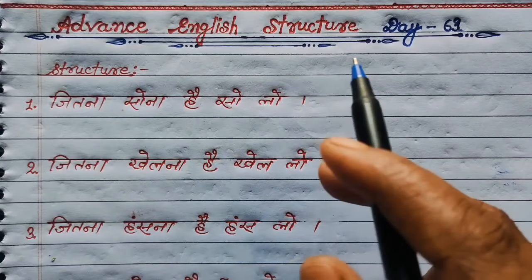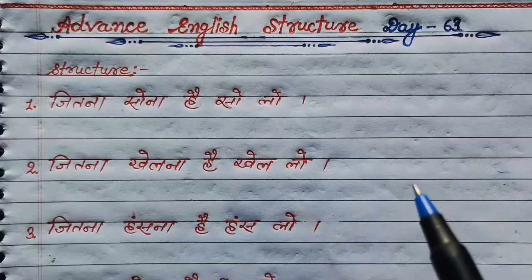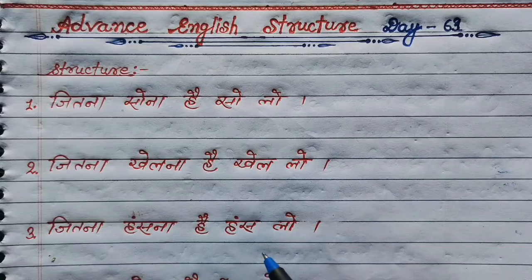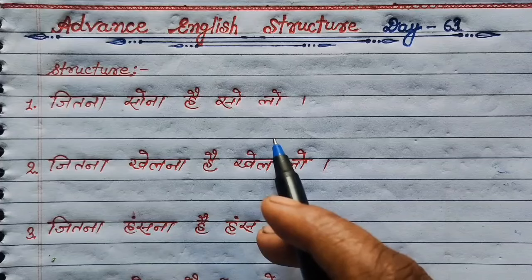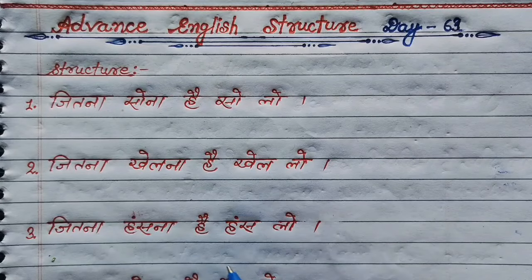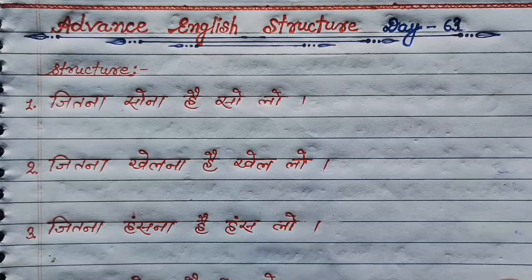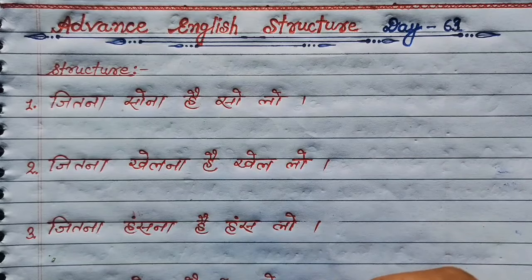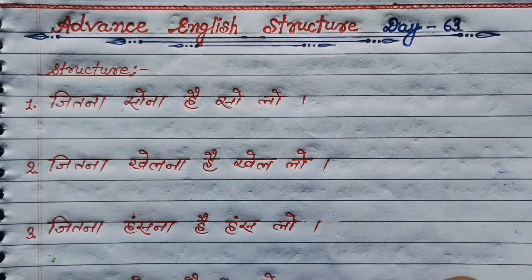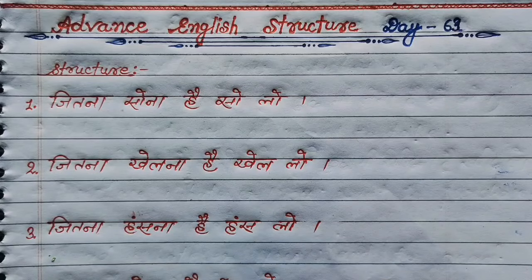Today is Advanced English Structure Day 63. Guys, हम काफी बार अपने day-to-day life में कुछ इस तरह के sentences बोला करते हैं जिसकी English हमें मालूम नहीं होती। जैसे कि English में बोलने की बारी आती है, तो हम लोग अटक जाते हैं। तो आज का यह class आप सब के लिए बहुत ही helpful होने वाली है। यदि आप इस तरह के sentences सीखना चाहते हैं, तो बने रहें इस वीडियो में end तक।